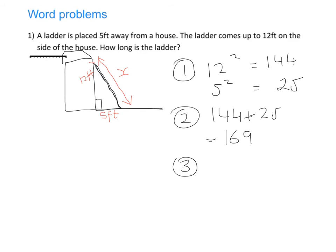Step three then is we think, well that's the entire area. However, I don't want the entire area, I just want the length of the side. So I'm going to find the square root of 169, and that gives me 13 feet. So that means that the length of that ladder is 13 feet.